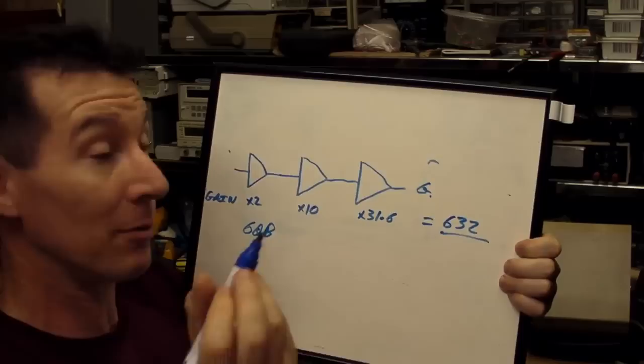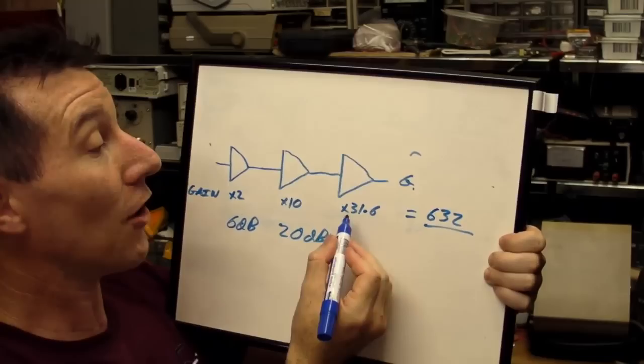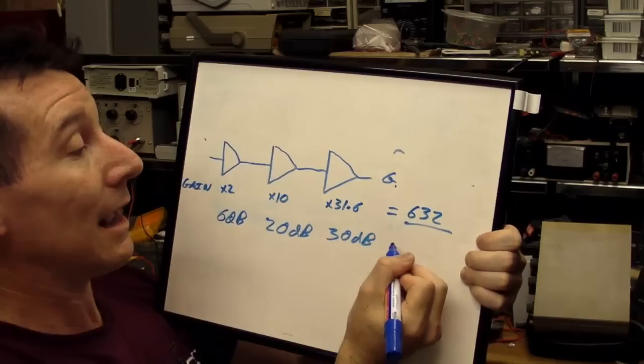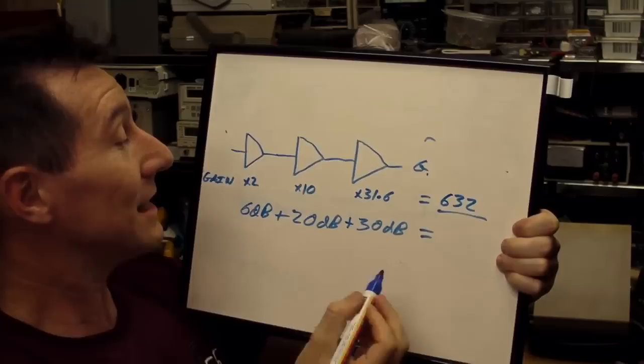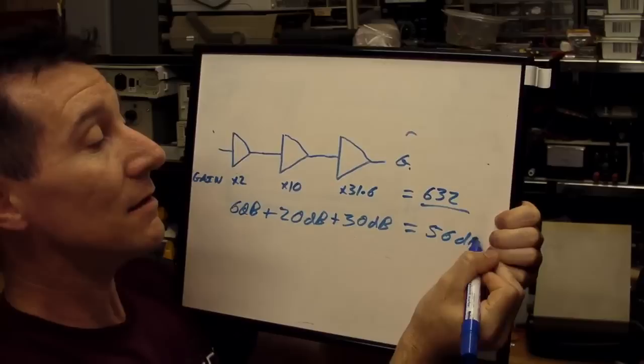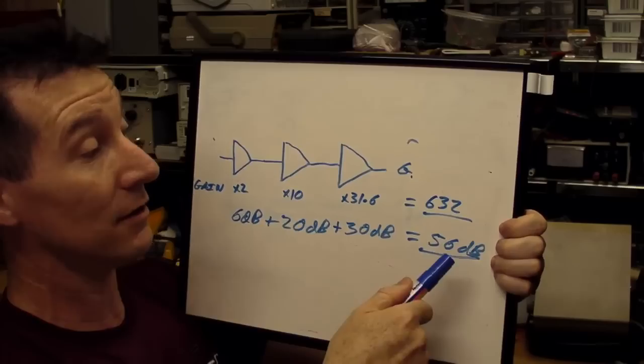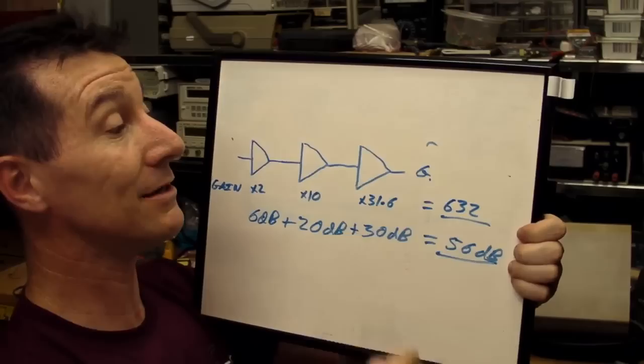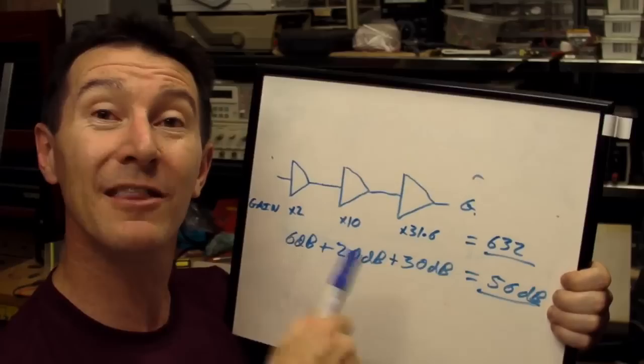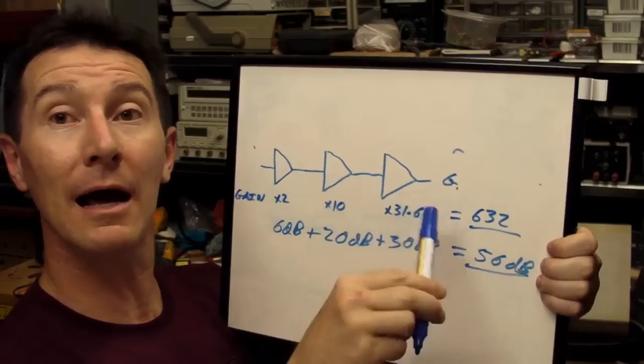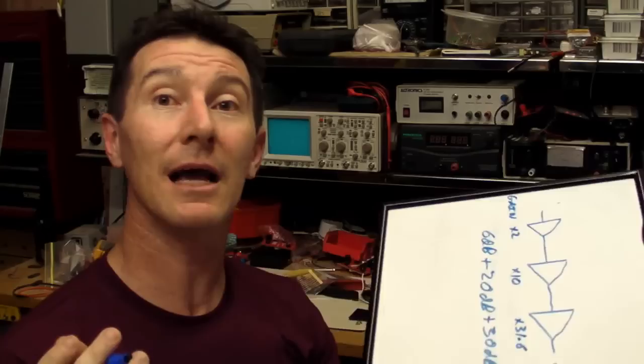But, if you convert these to dBs, you'll find it's actually easier. So, if you convert these ratios into dBs, times 2 is actually 6 dB, if you use the formula which we had before. Times 10 is actually 20 dB. And, times 31.6 happens to be 30 dB. And, where we multiplied these before, the good thing, the really neat thing about dBs is that now, you just add them together. 6 plus 20 plus 30 is 56 dB. And, that's your total gain. And if you actually convert 56 dB back into, using that formula in reverse, back into a ratio, you get 632. And, that's the advantage of dBs, is that you can actually, instead of multiplying things, you add them in dBs. And, the same as dividing things in regular ratios in dBs, you subtract them. So, it's easier to do calculations. And, the numbers are smaller and more manageable.